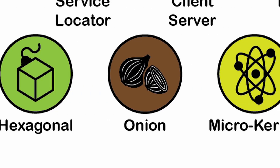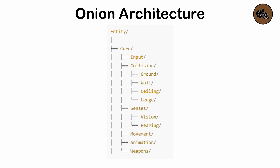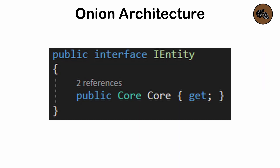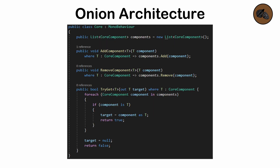Onion architecture. A form of layered architecture that organizes layers around a central core. It emphasizes separation of concerns, with dependencies pointing inward toward the core. The outer layers handle input-output, while the inner layers handle core logic and rules. For instance, characters in a video game might be represented as entities, and each entity has a reference to a core class responsible for adding, removing, and fetching components.